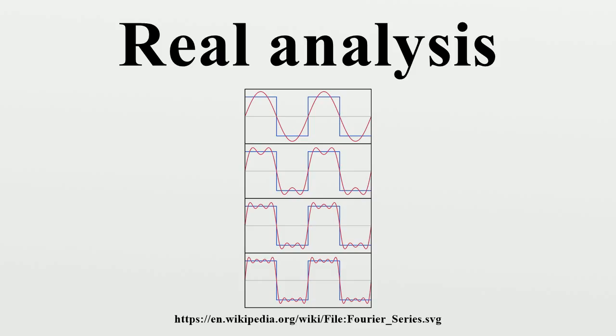Series: Given an infinite sequence of numbers, a series is informally the result of adding all those terms together: a1 plus a2 plus a3 plus... These can be written more compactly using the summation symbol. An example is the famous series from Zeno's dichotomy and its mathematical representation. The terms of the series are often produced according to a certain rule, such as by a formula or by an algorithm.